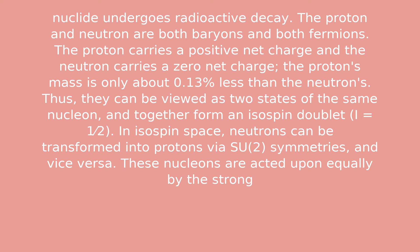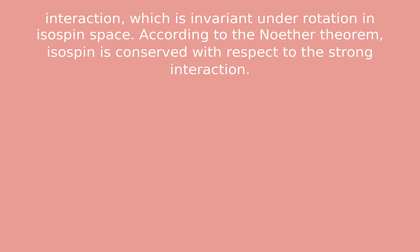Thus they can be viewed as two states of the same nucleon and together form an isospin doublet in isospin space. Neutrons can be transformed into protons via symmetries and vice versa. These nucleons are acted upon equally by the strong interaction, which is invariant under rotation in isospin space. According to Noether's theorem, isospin is conserved with respect to the strong interaction.